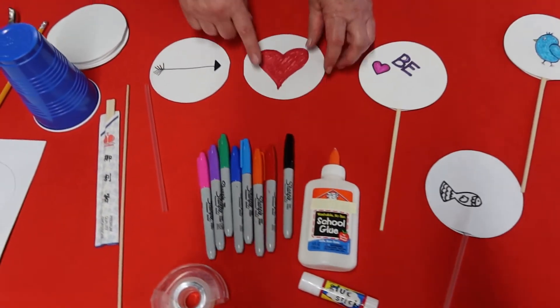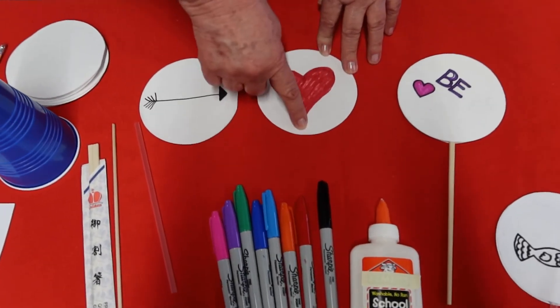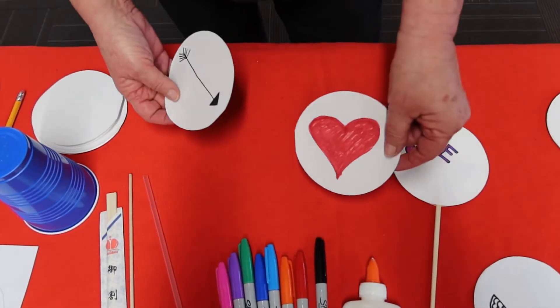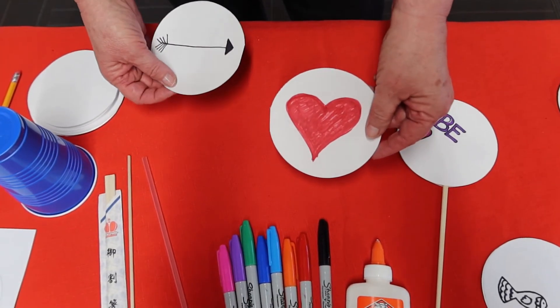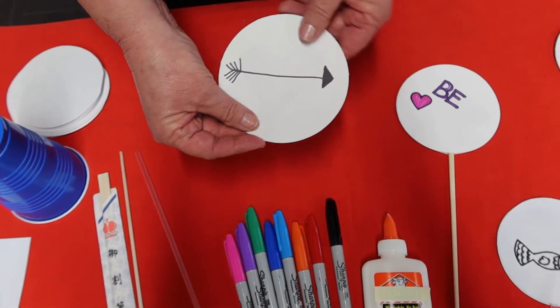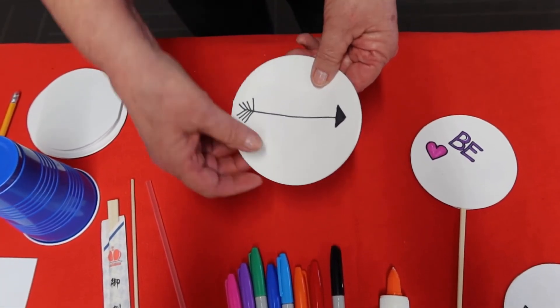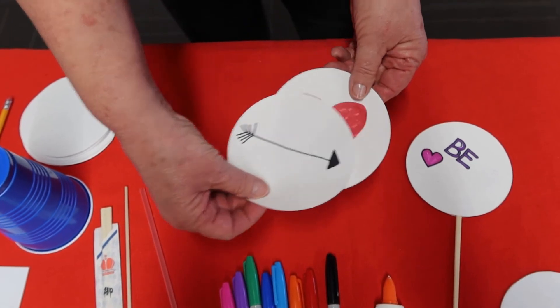You'll draw your image on one side. A little hint: you may want to hold that up to the light and then place your other one over so that it will correspond in the right place when you get ready to turn it.